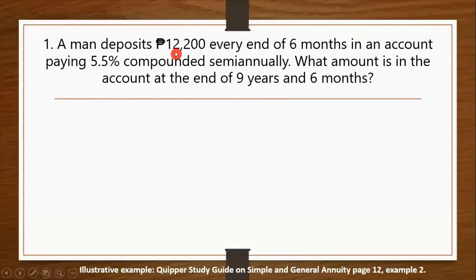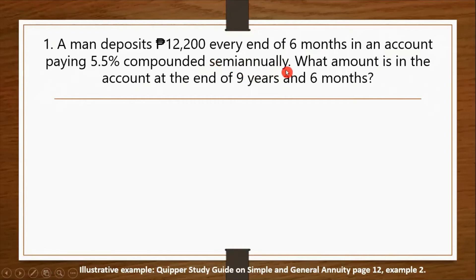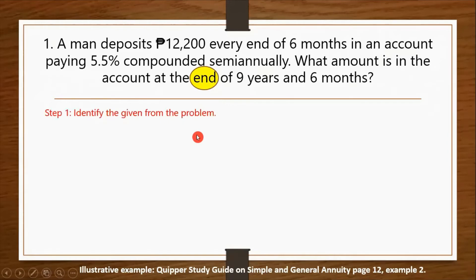Suppose a man deposits P12,200 every end of six months in an account paying 5.5% compounded semi-annually. The question is: what amount is in the account at the end of nine years and six months? This is a simple annuity since the payment interval of every six months coincides with the compounding period of semi-annually, which is also six months. It is classified as ordinary annuity since we have the keyword 'end.'